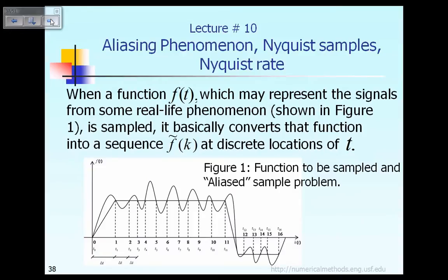Let's talk about something about aliasing phenomenon, Nyquist samples, and Nyquist rate. When a function f — let's say you have a periodic function f — in real life, it may represent some sort of a signal. For example, it can represent the noise coming from some musical instrument, as shown in Figure 1. So when this function f in real life is sampled, basically it converts the function into the function at some discrete locations corresponding to time t.